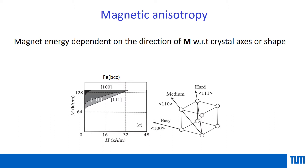However, when you apply a field along the 110 direction, the magnetization takes much longer — you need to apply a much higher field to saturate it. And when you apply a field along the 111 direction, the magnetization requires even further field to saturate it, shown as light gray color. In this way, you can say that there are easy, medium, and hard axes, and you can really differentiate between easy and hard axes.